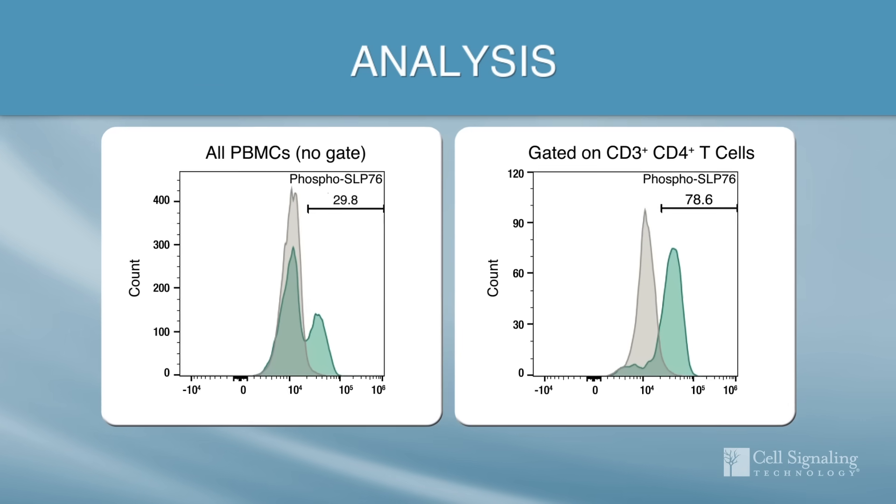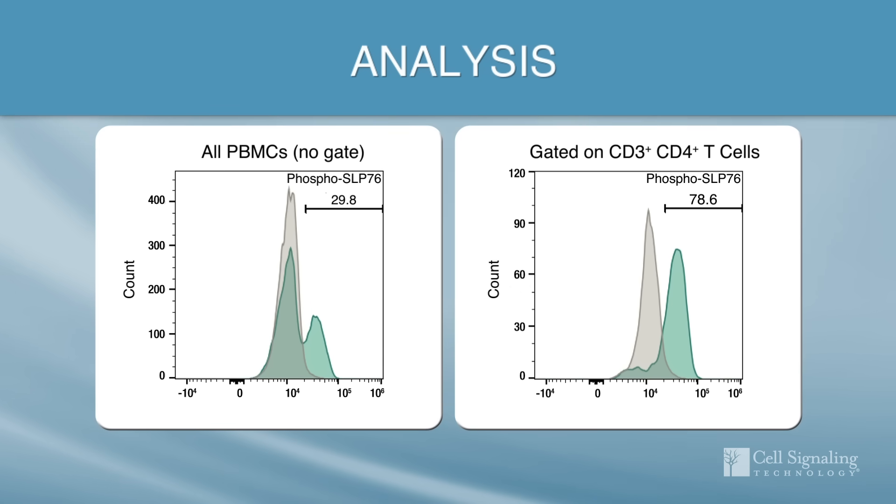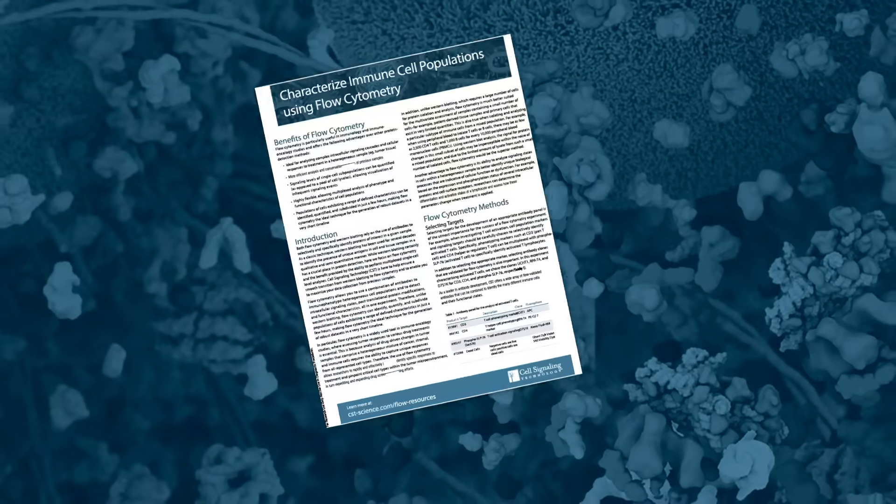In our experiment, T cell activation is clearly distinguishable in CD3, CD4 positive T cells and the percentage of cells positive for phospho-SLP-76 expression after activation is higher in the gated subpopulation than in the bulk PBMCs.